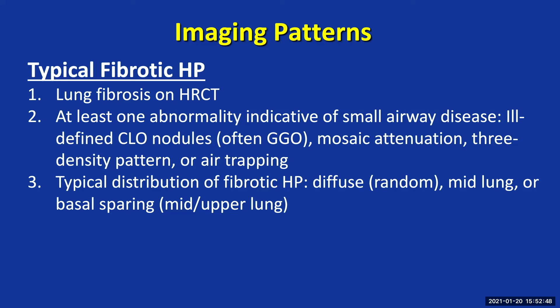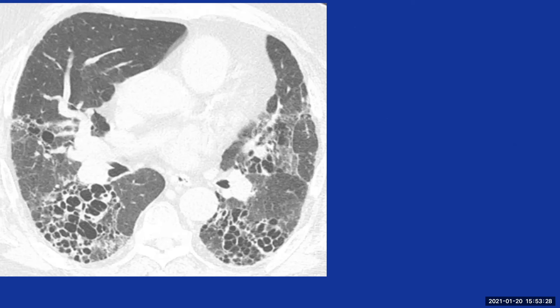You also need a typical distribution of the fibrotic disease. Categories include a random (diffuse) distribution, mid-lung disease, or relative basal sparing — meaning mid or upper lung preponderance. Pure upper lung preponderance is actually part of the compatible-with fibrotic HP distribution rather than typical, though if you have upper lung preponderance with at least one small airway abnormality, one can argue that's typical fibrotic HP, since upper lung preponderance implies relative basal sparing by definition.